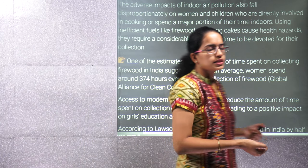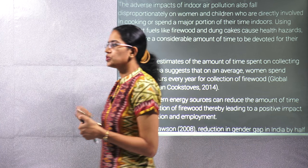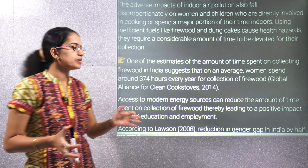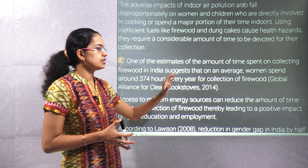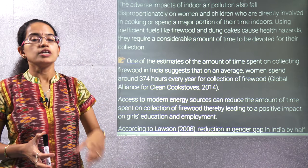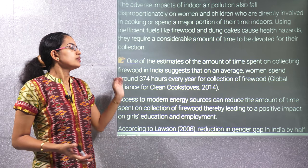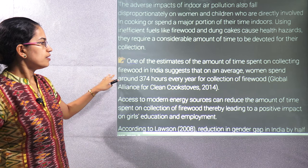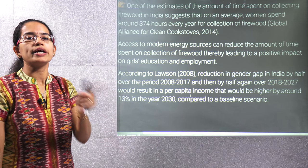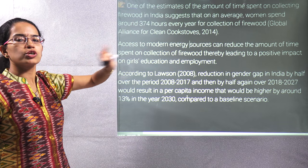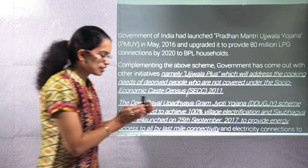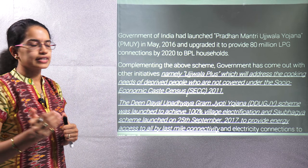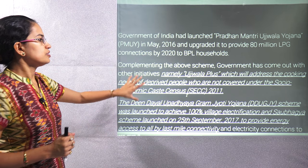Under the Ujjwala scheme we talk about providing LPG cylinders to every household below the poverty line. Statistically, women used to spend around 374 hours every year simply to collect firewood for cooking. This time can now be productively utilized for other work. Therefore we are trying to work more on value addition to agriculture and allied fields. Women in rural India who are now free from firewood collection can invest that time in agro and agro-allied activities, increasing GDP.